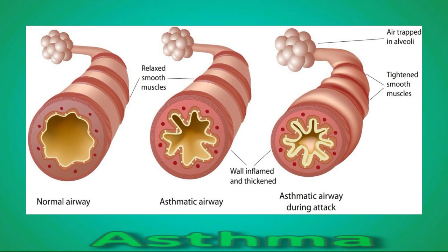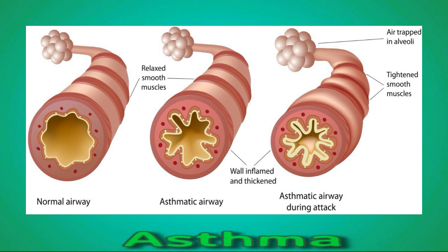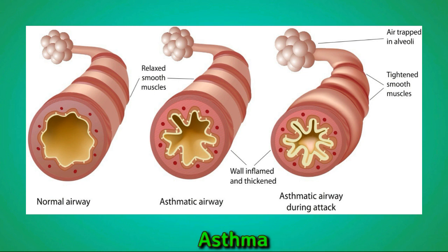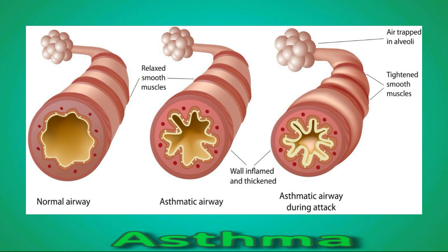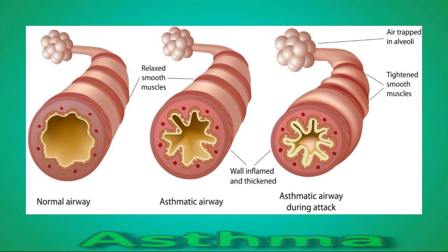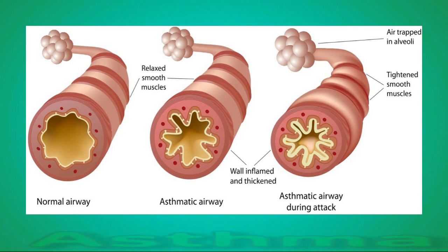Asthma is a condition that causes airway inflammation and lung irritability, which make a person more prone to wheezing and shortness of breath. Chronic coughing and wheezing associated with asthma can cause feelings of chest tightness. Typically, this will make a person's chest feel tight on both sides, not just the left.